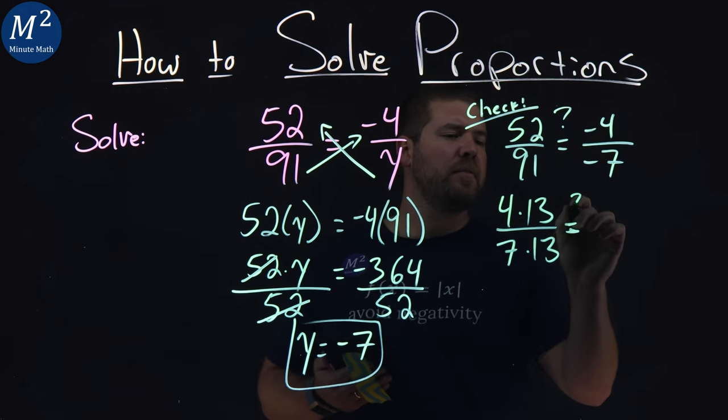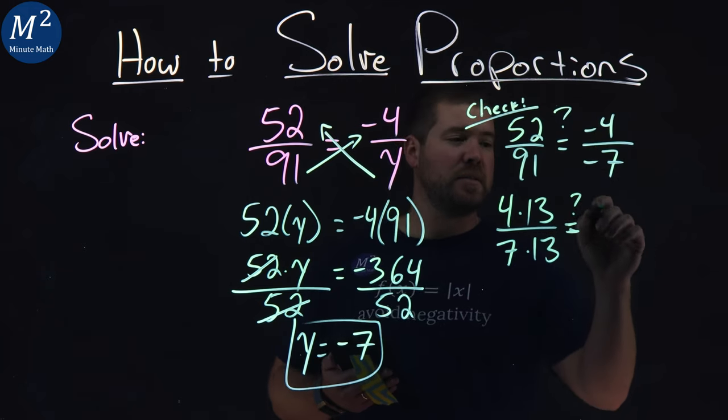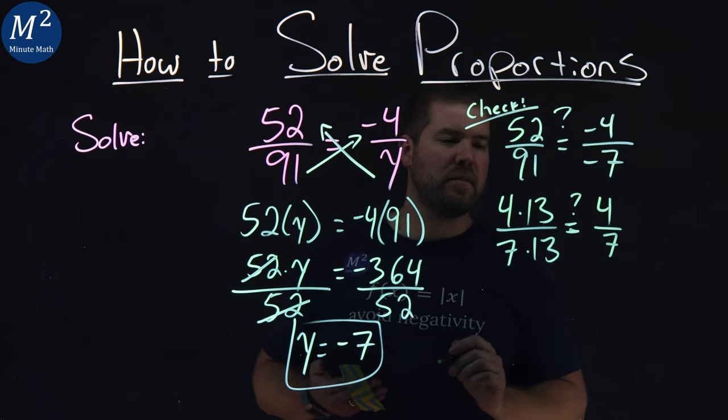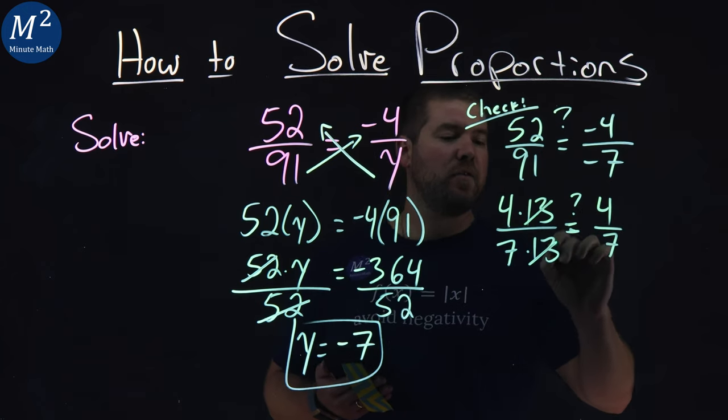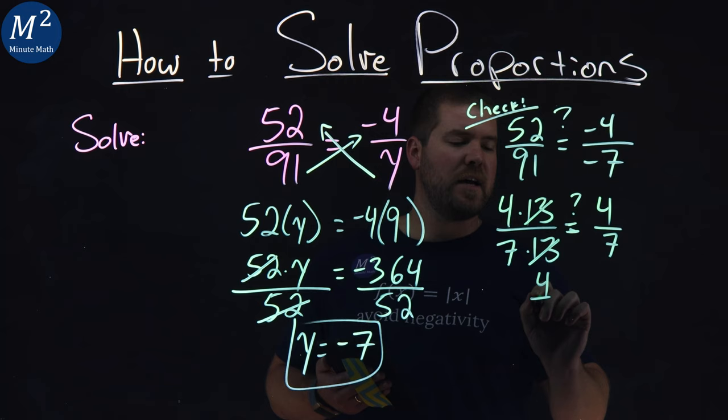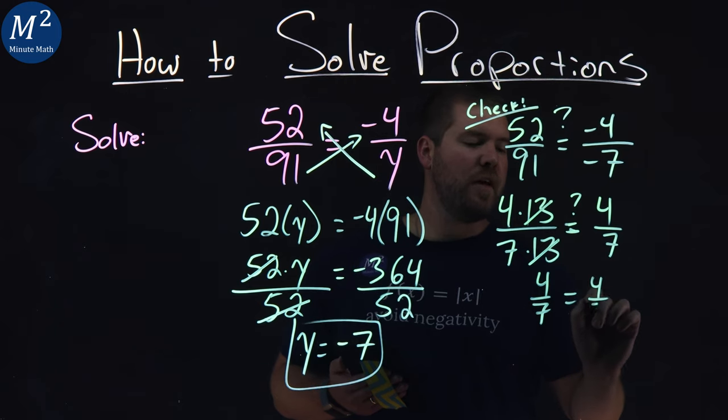The right-hand side here, negative and negative make a positive, so we have 4 sevenths. 13s cancel on the left, leaving me with 4 sevenths, is equal to 4 sevenths.